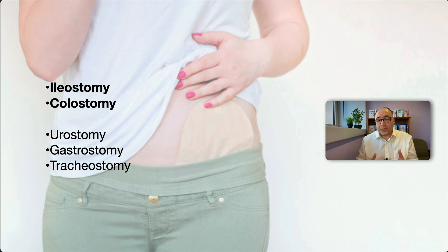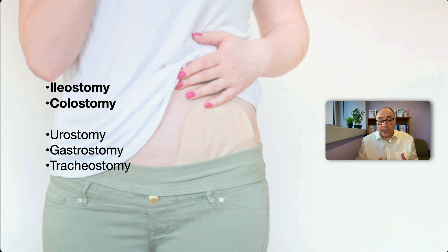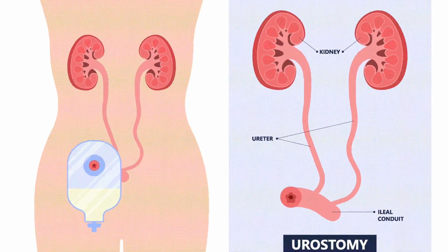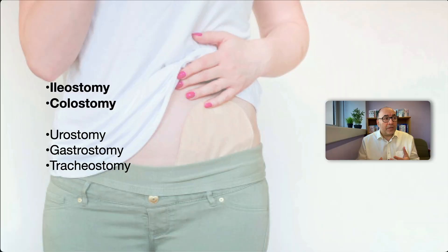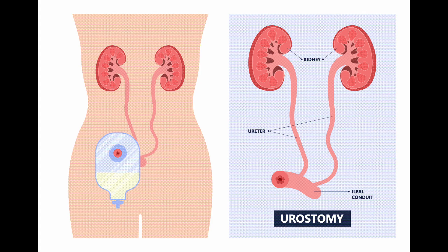There are other types of stomas as well. A urostomy is a conduit for urine — this would be in a situation where the patient has had major bladder surgery, potentially having their whole bladder removed, and so the ureter is brought out to the skin through something called an ileal conduit.